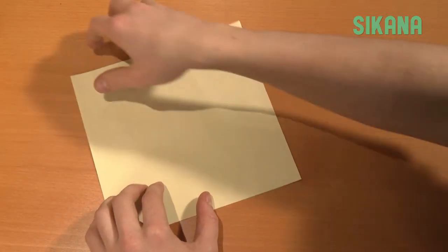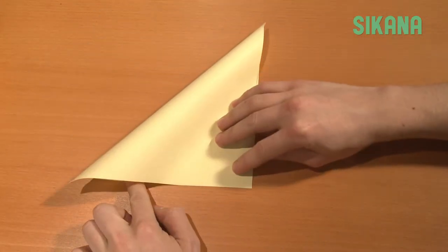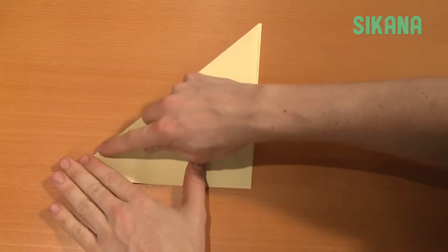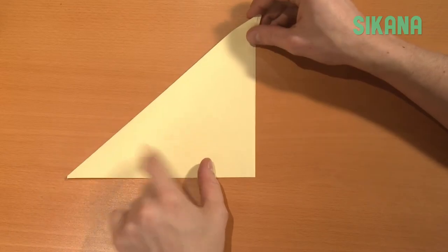Take a square sheet of paper and fold it diagonally. Then fold this part like this.